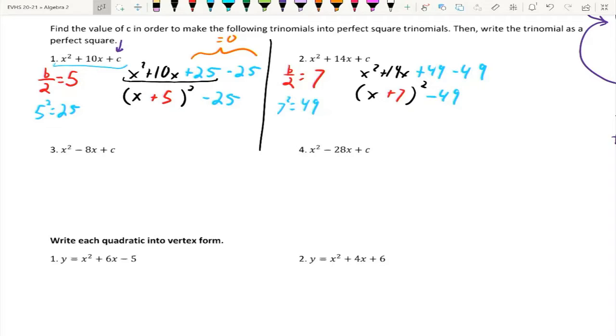Do the exact same process with negative numbers. Again, b divided by 2. Now we've got a -8, which is -4. Now we're going to square that. Now -4 times -4 becomes positive 16. So let's add that in now to complete my square. x² - 8x + 16 and -16. Now we're going to factor that down. This time we're going to get (x - 4)² and then -16 on the end.